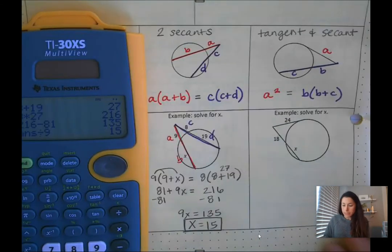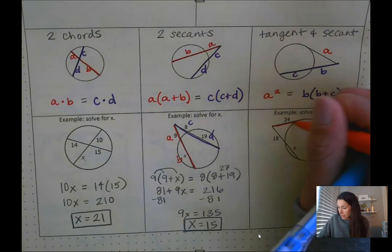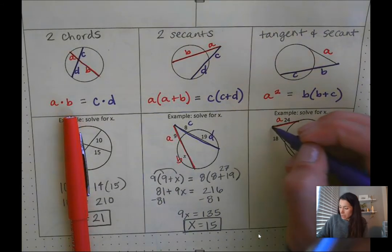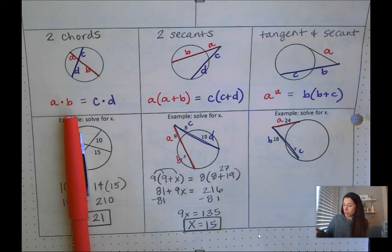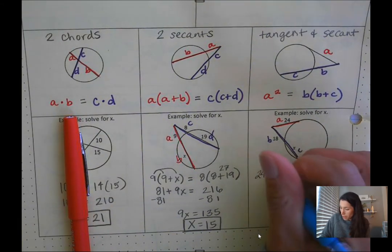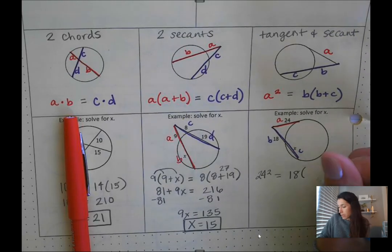Our last segment here we have 24. That would be our tangent segment. So that's like the A segment. And then the 18 and X we'll call this the B and the C, the outside and then the inside portion. So we're going to have A squared or 24 squared is equal to 18, the outside piece, multiplied with 18 plus X.